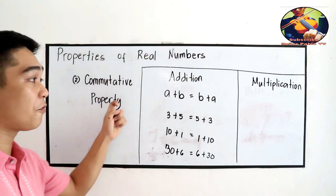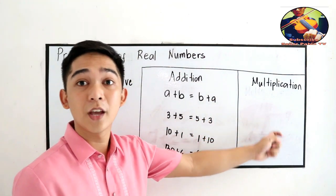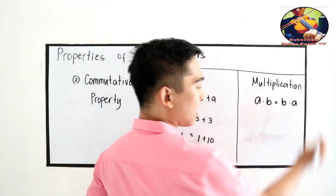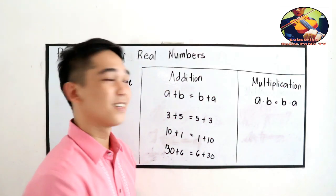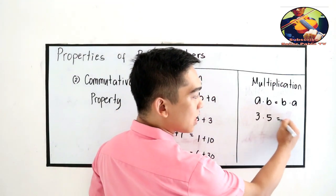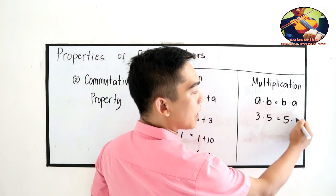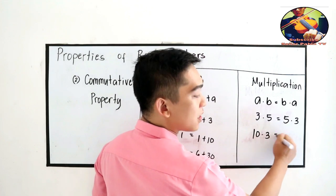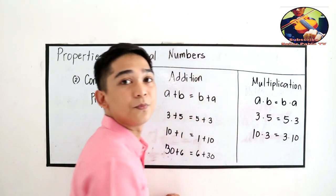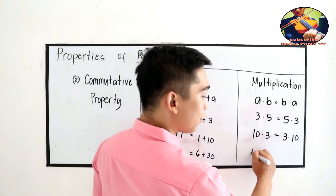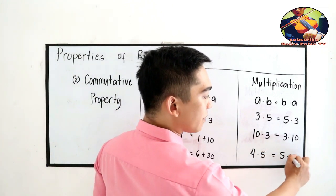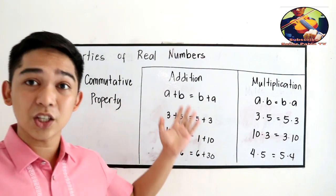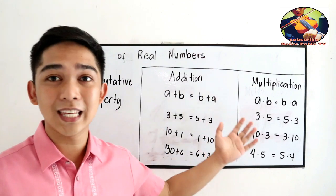For the commutative property of multiplication, A times B equals B times A. So 3 times 5 equals 5 times 3, 10 times 3 equals 3 times 10, and 4 times 5 equals 5 times 4. That's how easy the commutative property of addition and multiplication is.